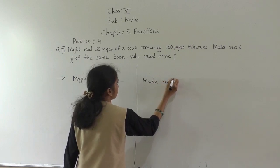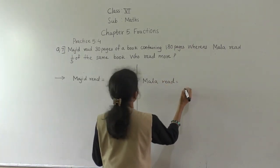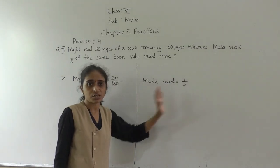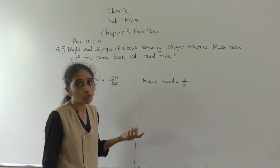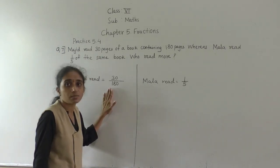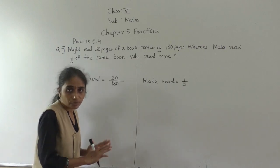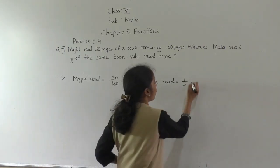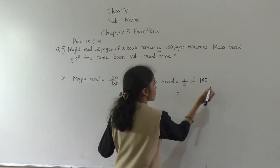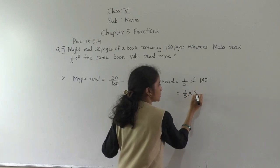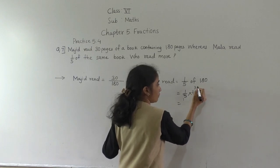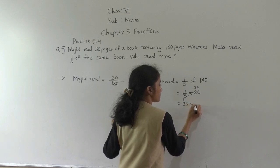Mala read 1 fifth of the same book. Same book means 180 pages, so 1 fifth of 180. Of means multiplication: 1 upon 5 into 180. Five ones are 5, five threes are 15, five sixes are 30 — so Mala read 36 pages.